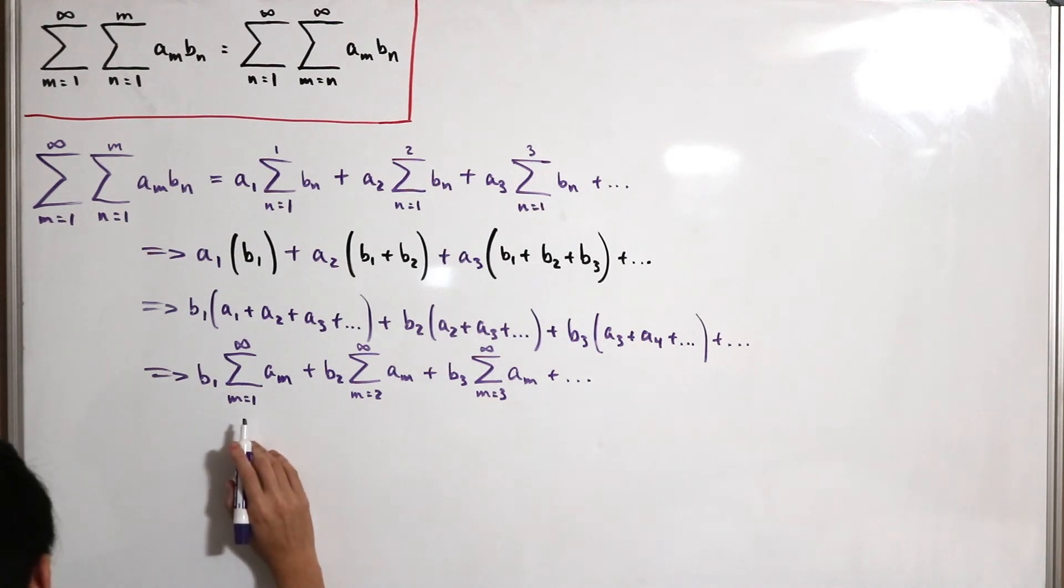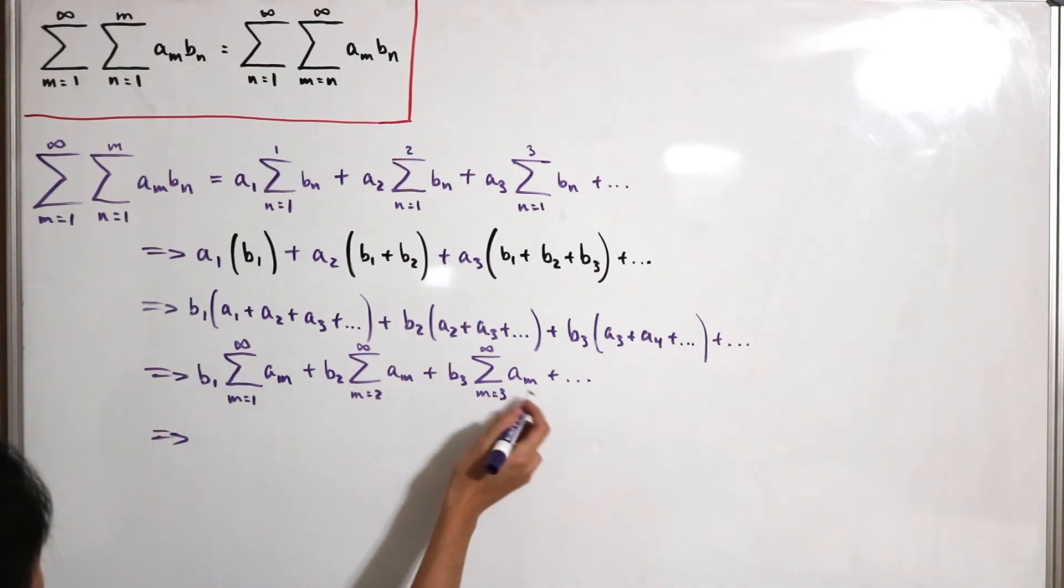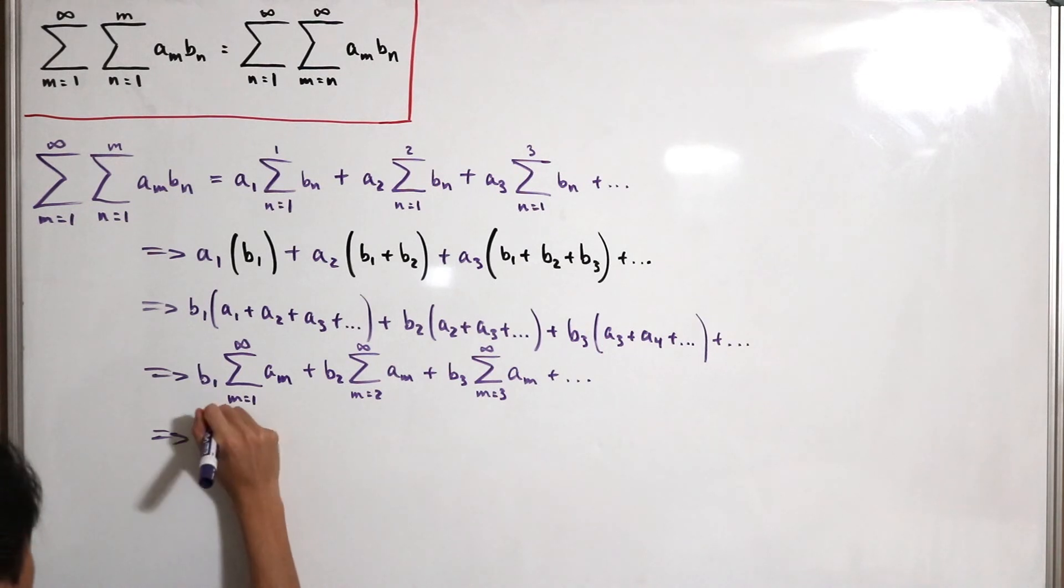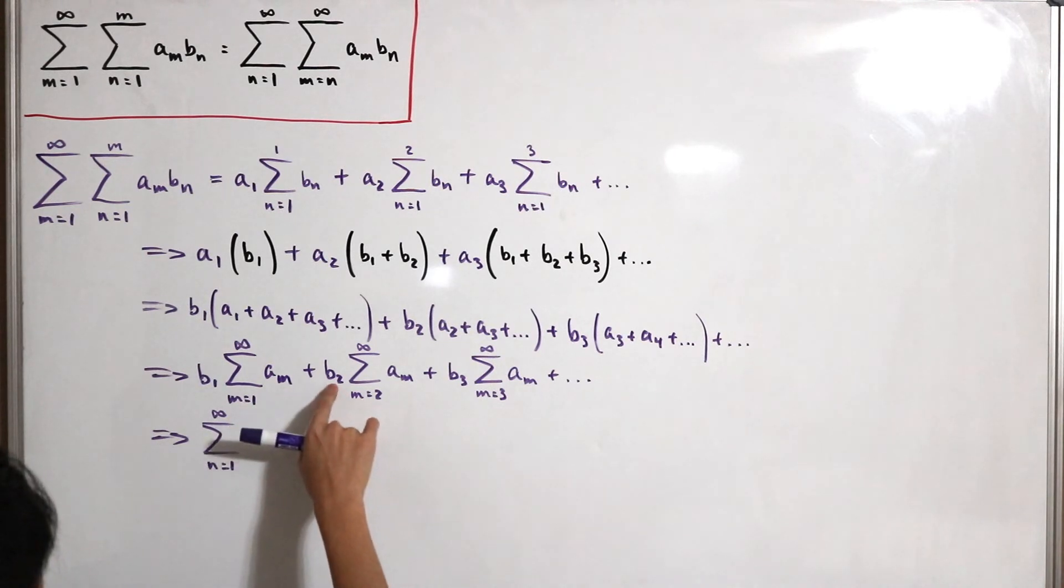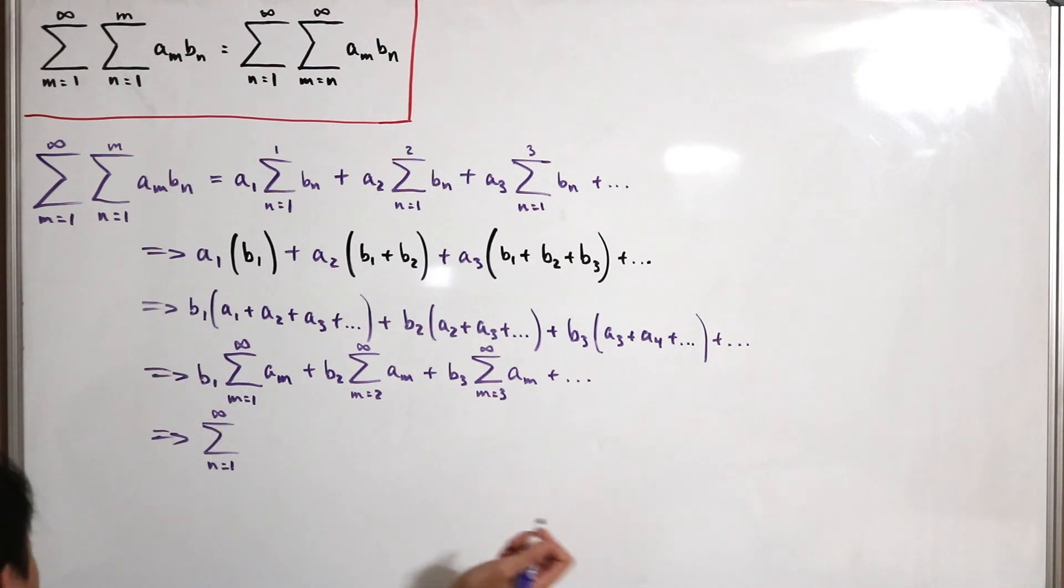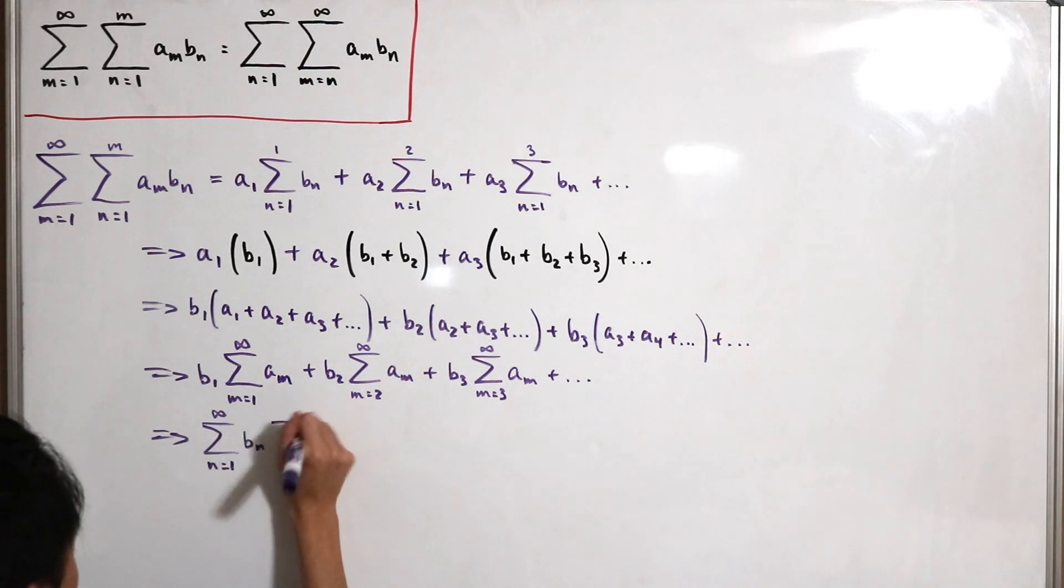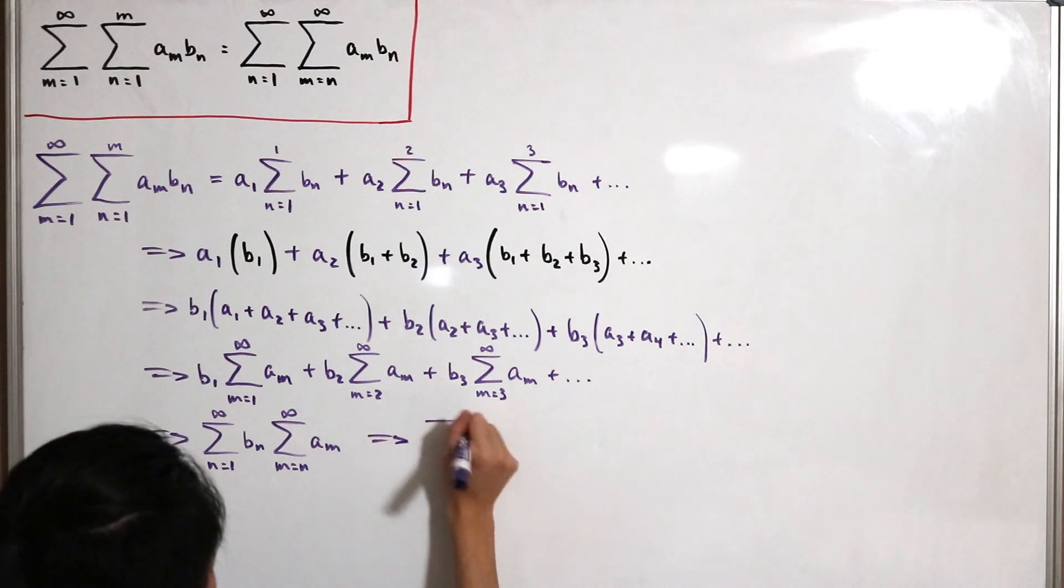And now you'll notice that everything is in terms of the factored b1, b2, and so on. So now you can see that everything associated with the b terms of the summation, we can write this out as an infinite sum. So we start that this is infinity, n equals 1. And then you'll notice we can see the association with b1 with m equals 1, b2 is m equals 2, then b3 with m equals 3. So that says that m equals n.